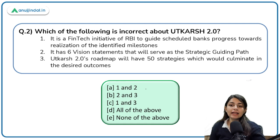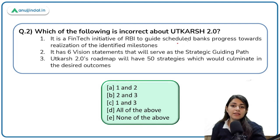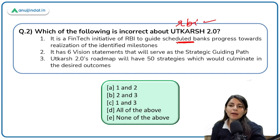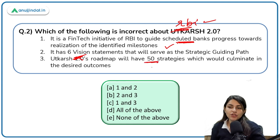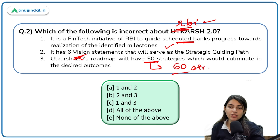Which of the following is incorrect about Utkash 2.0? Option: It is a fintech initiative of RBI to guide scheduled banks' progress towards realization of identified milestones — No, it was not for scheduled banks, but for RBI itself. RBI brought it for itself, wherein RBI defined its mission, vision, and milestones. There were 6 vision statements. Another option: The Utkash 2.0 roadmap will have 50 strategies — No, Utkash 2.0 brought out 60 strategies which RBI will follow to culminate into desired outcomes.